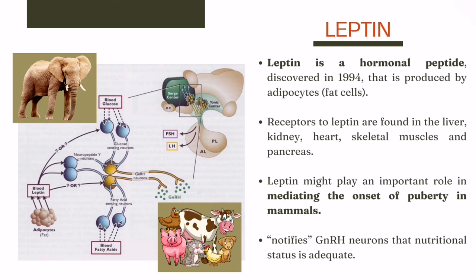Leptin is a hormonal peptide discovered in 1994 and produced by adipocytes or fat cells. The amount of leptin in the blood is directly connected to the amount of fat in the body. The receptors to leptin are located in the liver, kidney, heart, skeletal muscles, and pancreas. The discovery that leptin receptors are also present in the anterior lobe of the pituitary and hypothalamus has sparked notable interest in the prospect that leptin might play an essential role in mediating the onset of puberty in mammals. Leptin may be an important signal that notifies neurons that nutritional status is adequate because a threshold degree of fatness has been achieved.